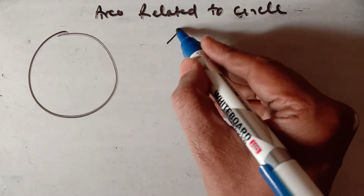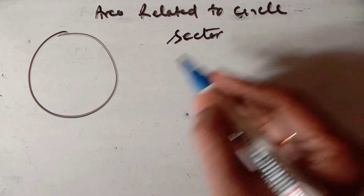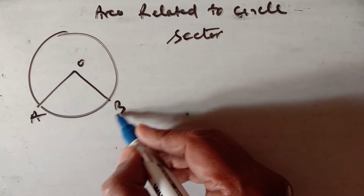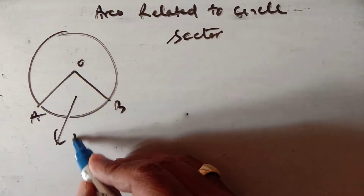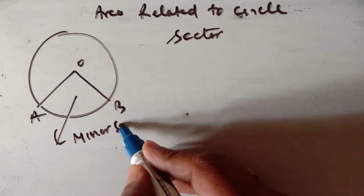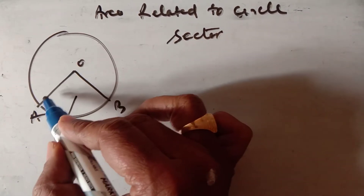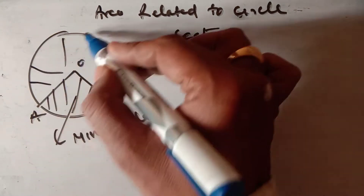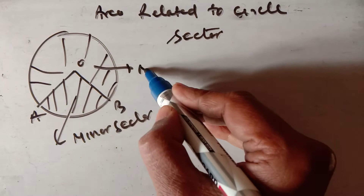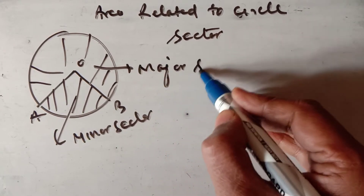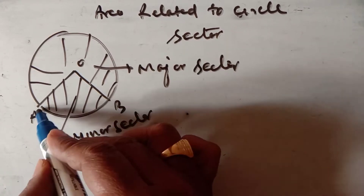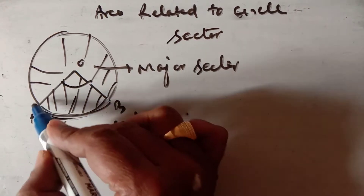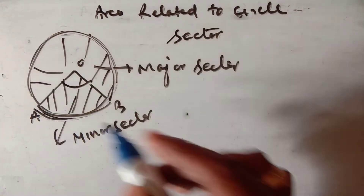First, let's discuss what is a sector and what is a segment. A sector is the area bounded by two radii of the circle. This is the minor sector, and the area bounded by the other two radii is the major sector. The arc of the circle can be a minor arc or a major arc.